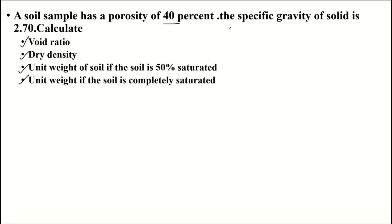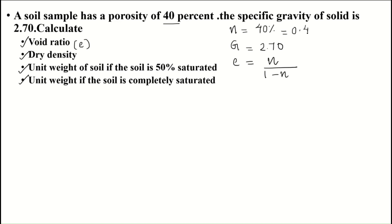It is given that porosity n is 40% and specific gravity G is 2.70. We can find out the void ratio: e = n / (1 - n) = 0.40 / (1 - 0.40) = 0.4 / 0.6. Our answer will be 0.667. That is, void ratio e = 0.667.